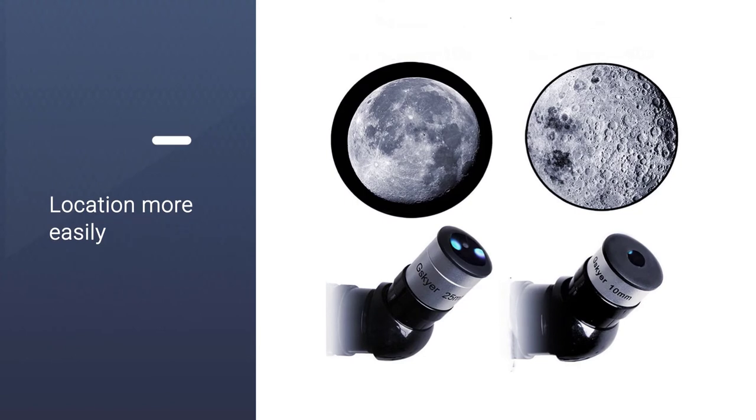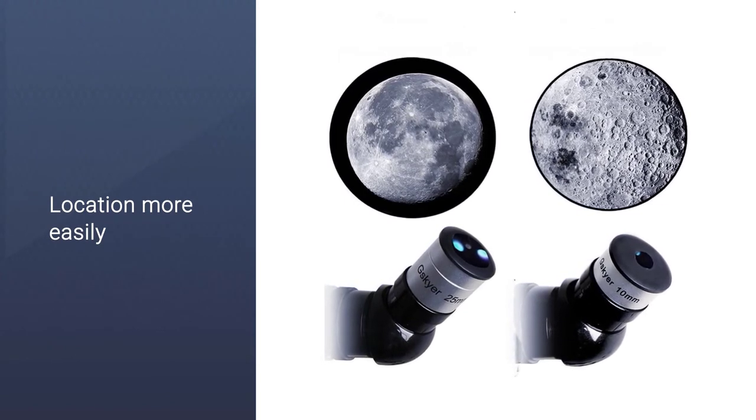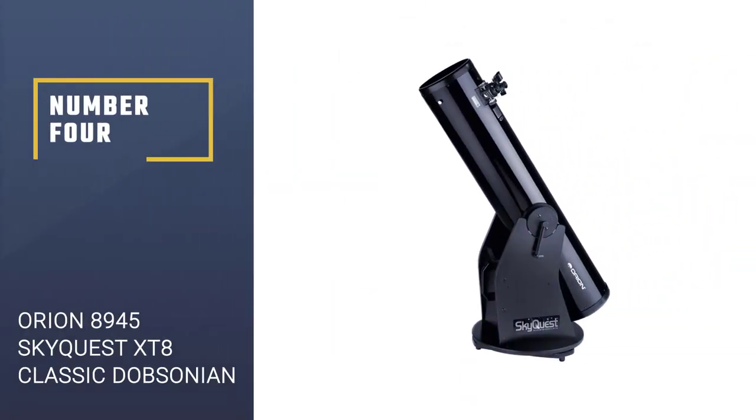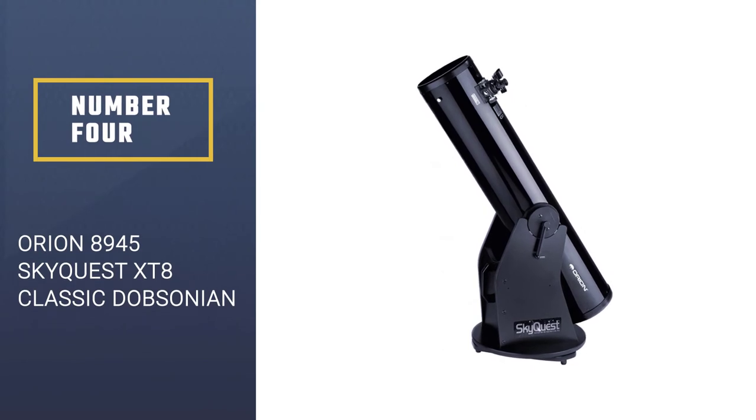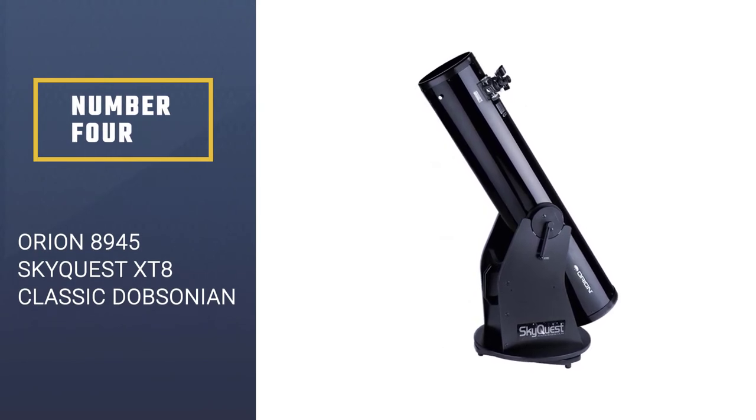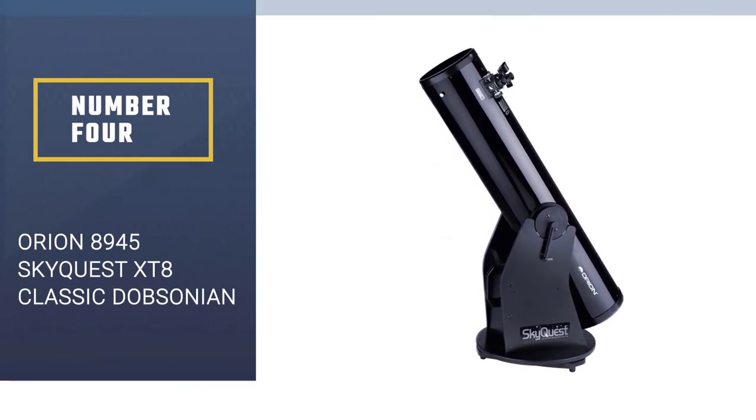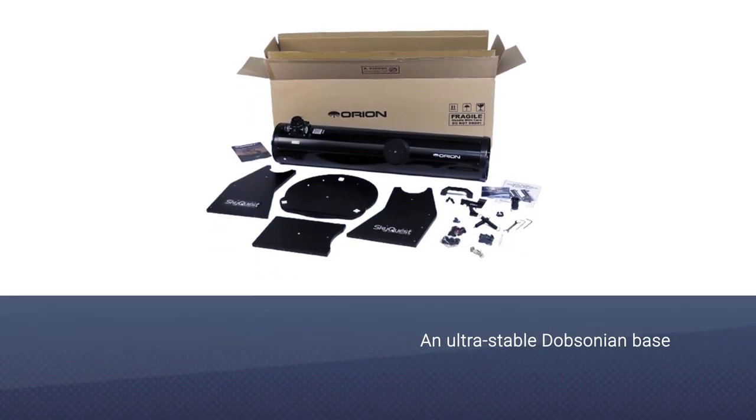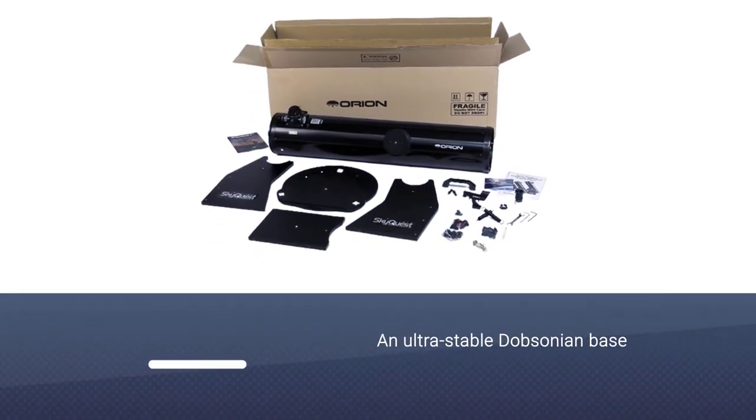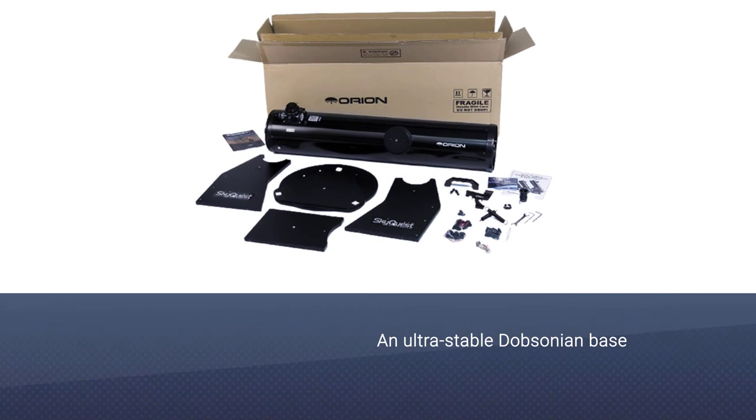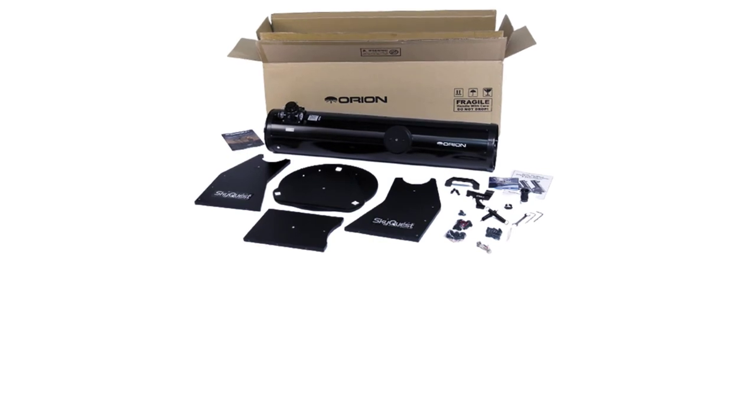Number four: Orion 8945 SkyQuest XT8 Classic Dobsonian. When you want the best telescope to view planets and galaxies, you can go for this Orion product. It has 8-inch diameter reflector optics which allow you to view planets in close-up detail.